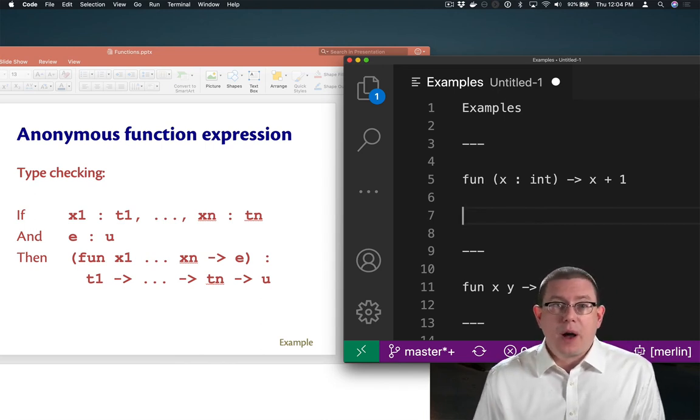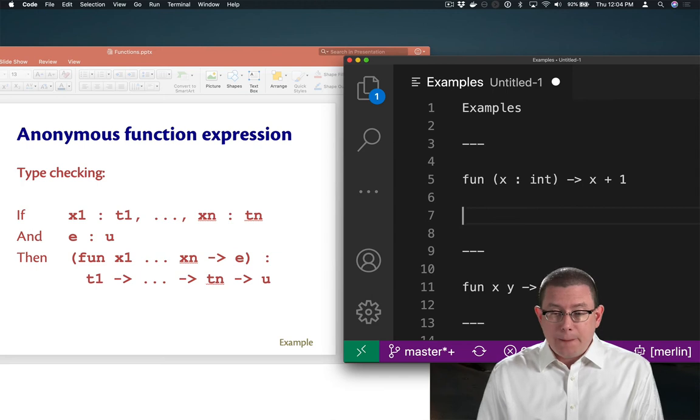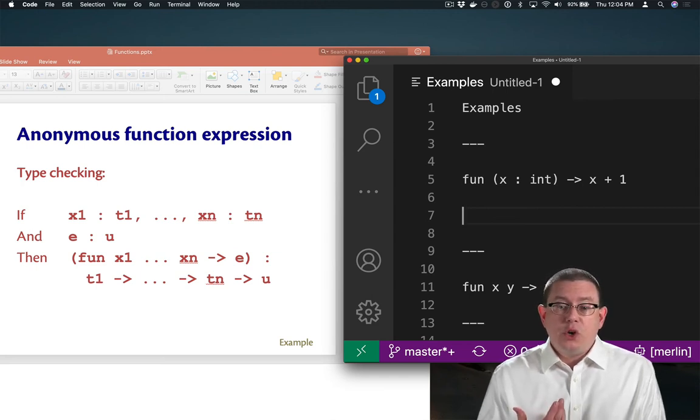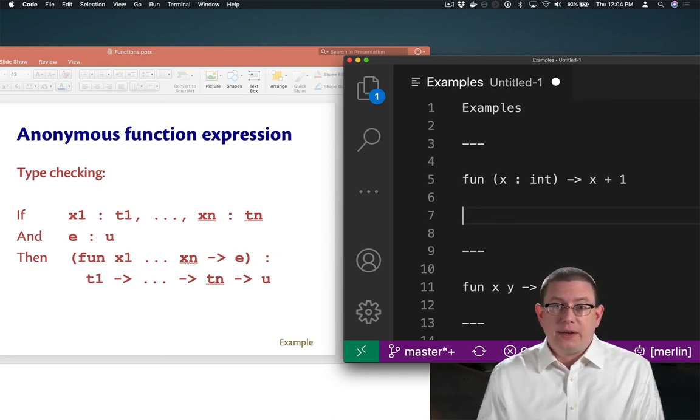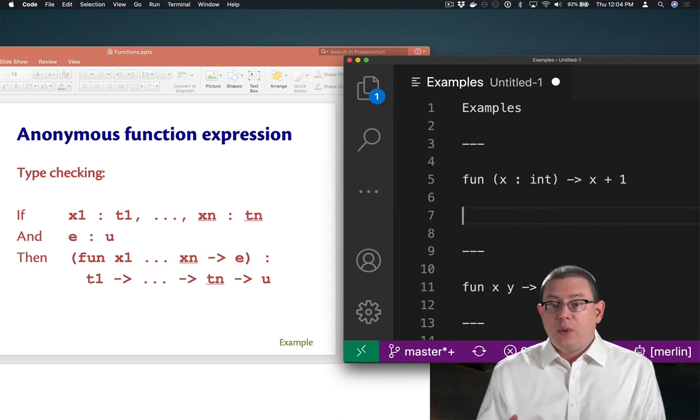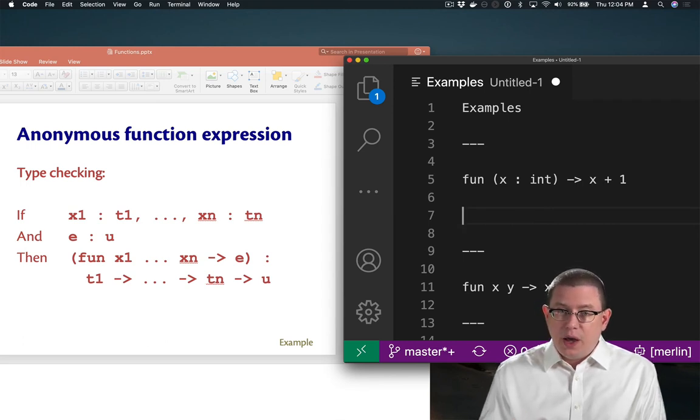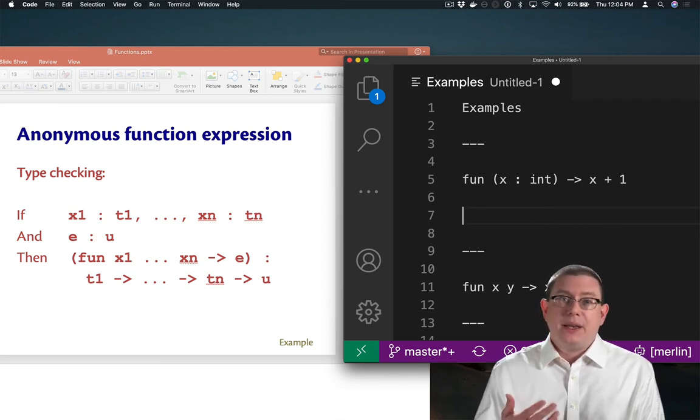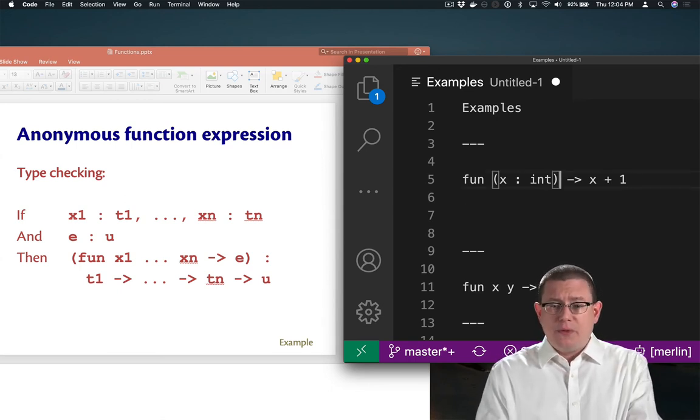Let's put aside the problem of type inference for now. You and I can of course with our human brains look at the right hand side of that function expression and say, well, if x is being added together with 1 with the plus operator, then x must be an integer, of course. That's approximately how OCaml figures it out too.